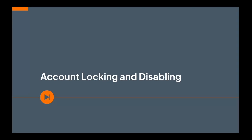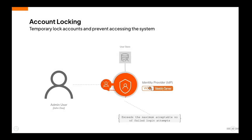Let's move on to the account locking, disabling, and suspending functionality in WSO2 Identity Server. Privileged users can temporarily lock suspicious user accounts and prevent the users from logging in. These locked user accounts can only be unlocked by privileged users. The privileged users can also define the maximum number of failed login attempts the system accepts. When a user exceeds that maximum, the user account will be automatically locked. The privileged users can also define for how long the account should be locked.